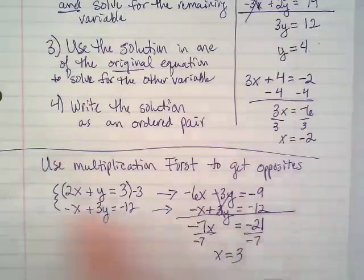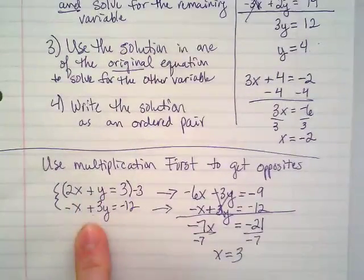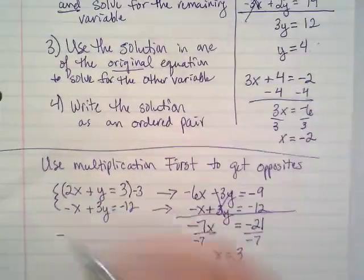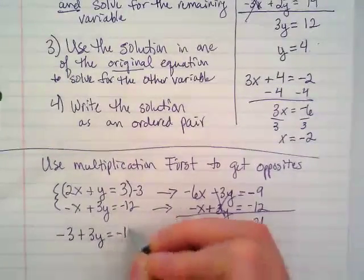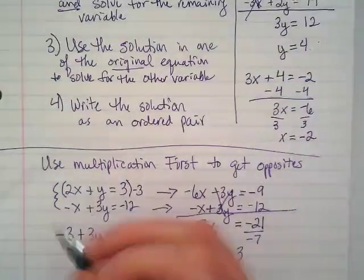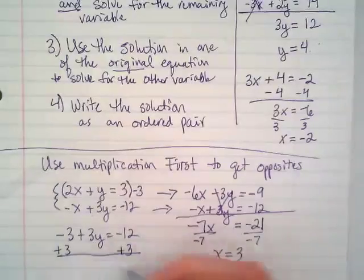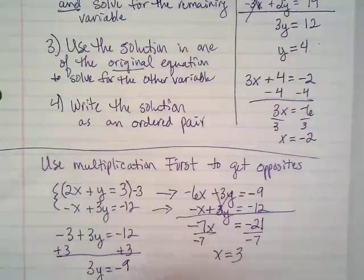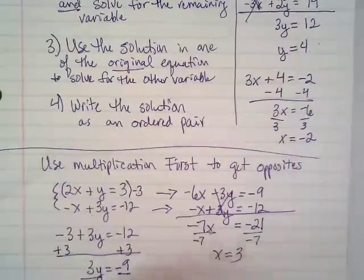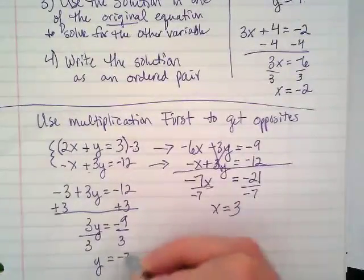We've got our x. We're going to put it into one of these equations. Do you guys want to put it in the first one or the second one? Second. Okay. Negative 3 plus 3y equals negative 12. I'm going to add 3 to both sides because now we want to solve for y. 3y equals negative 9. Divided by 3. You can plug it in any equation. Y equals negative 3.